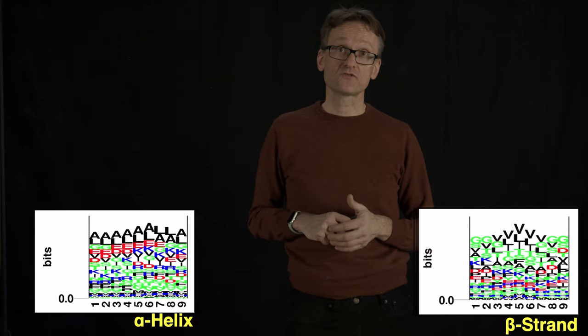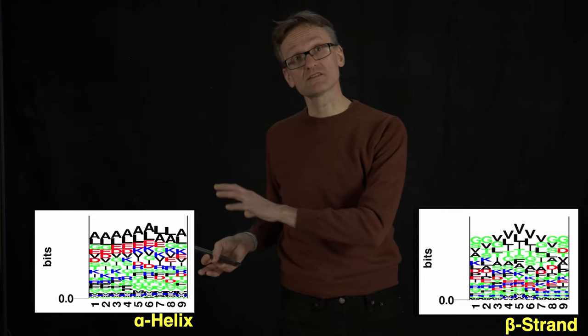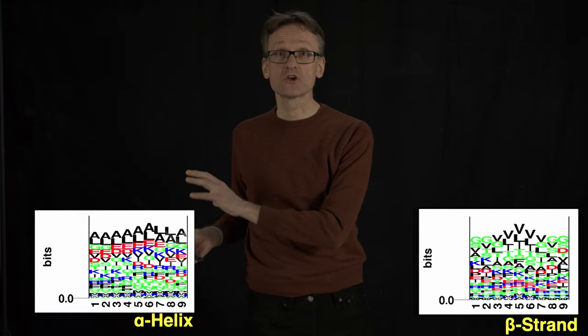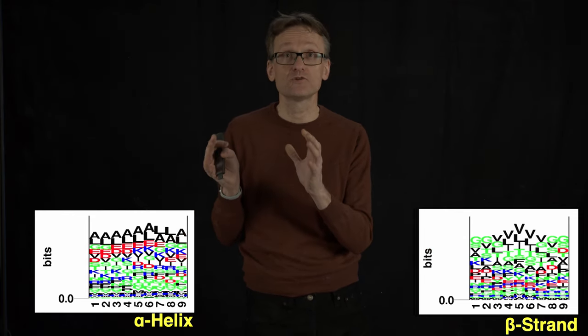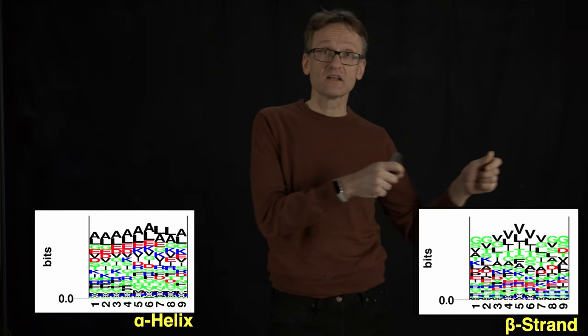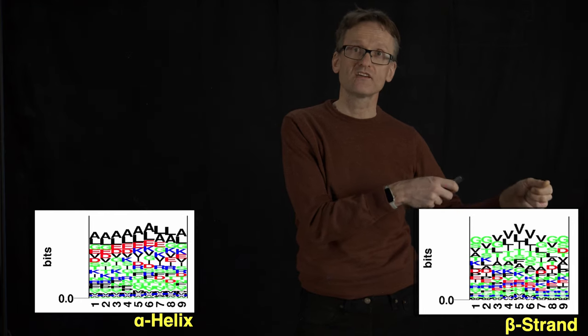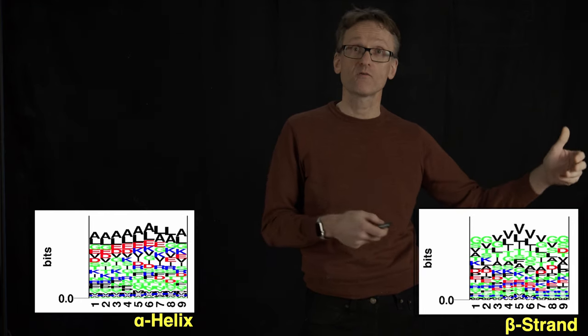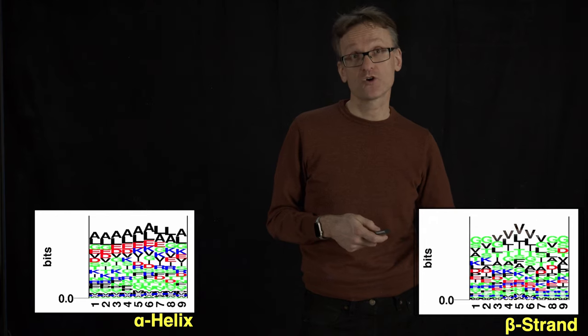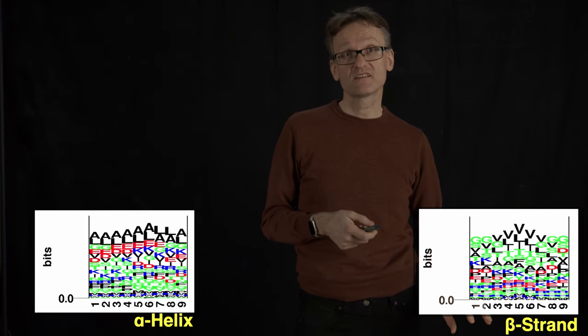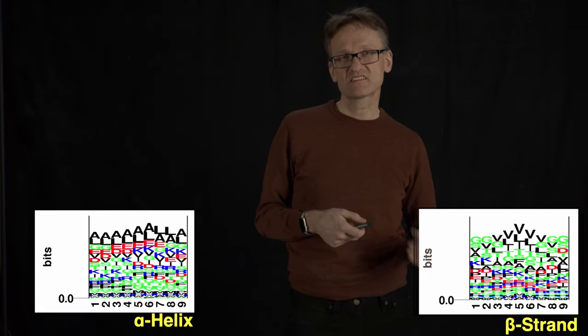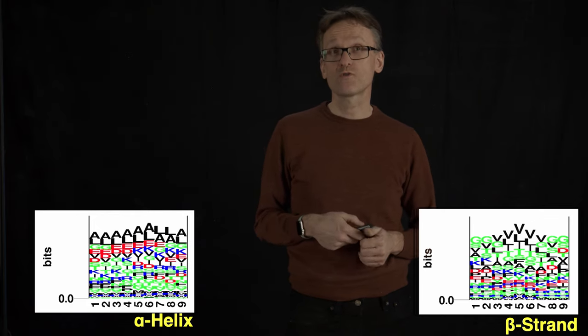It's harder to predict beta strands, mostly because the alpha helix is a very local structure. It's local in sequence. It's going to be 20 residues next to each other, while a single beta strand has to form a beta sheet together with strands that might be very far away in sequence. So this is much harder. Predicting the secondary structure when it's beta sheet involves some sort of long-range interactions.